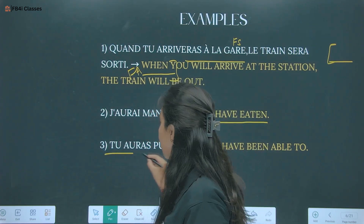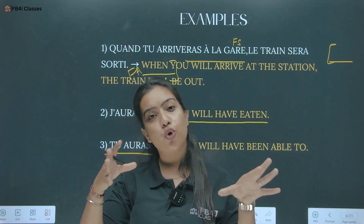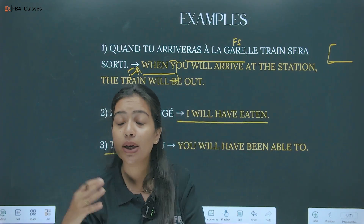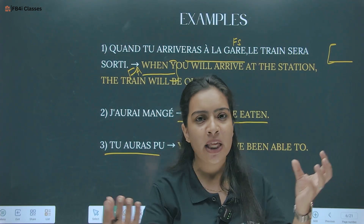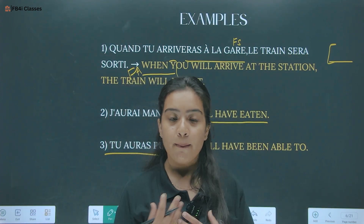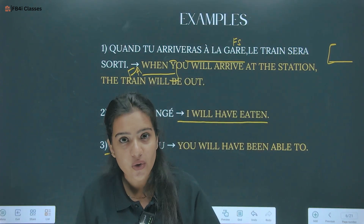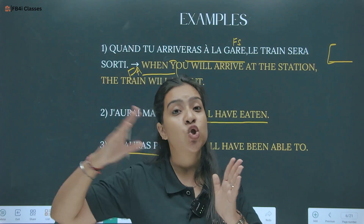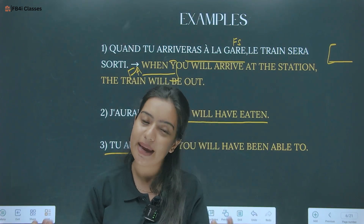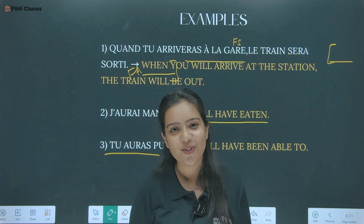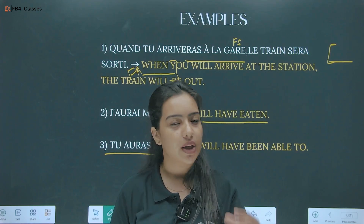Tu auras pu — 'you will have been able to.' Before I go to sleep, you will have been able to clean the room. My going to sleep is a future action, but the room being cleaned before that is another future action that is already complete — so that is Future Antérieur. Both are future actions but one completes before the other.